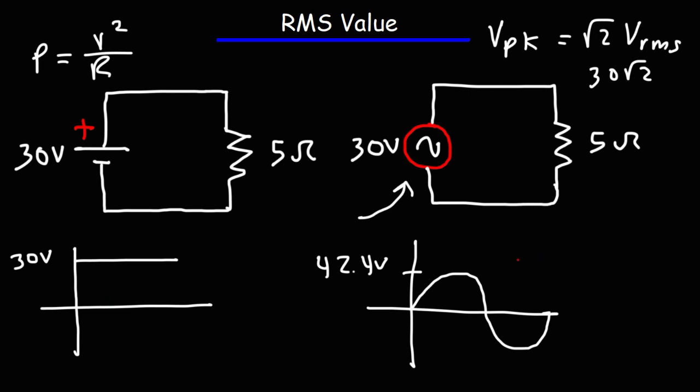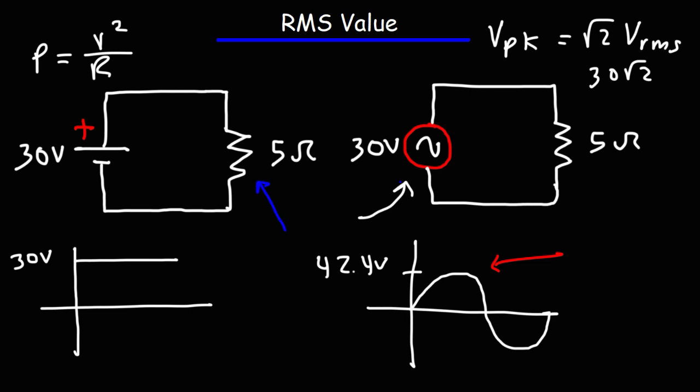So 42.4 volts is the maximum voltage of this AC sine wave. As you can see, it's not the same as the RMS value. To get the same power dissipation across the resistor, you need to use the RMS voltage — not the peak voltage — and that is 30 volts. That's why it's important to understand how to calculate the RMS value given the peak value, because the RMS value tells us what the equivalent power dissipation would be to that of a DC circuit.